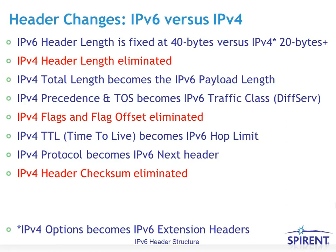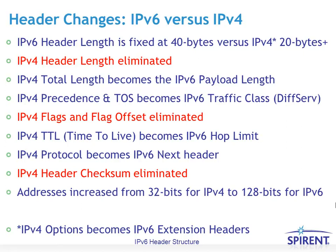The IPv4 header checksum is eliminated. When IPv4 was originally designed, links were considered very unreliable and might even corrupt the IP header. With IPv6, links are considered more reliable, and therefore a checksum is not required over the header. Of course, the address size increased from 32 bits for IPv4 to 128 bits for IPv6.